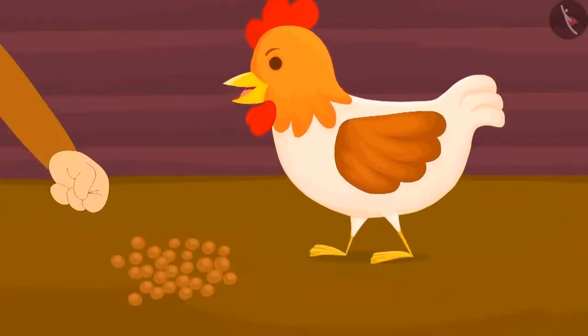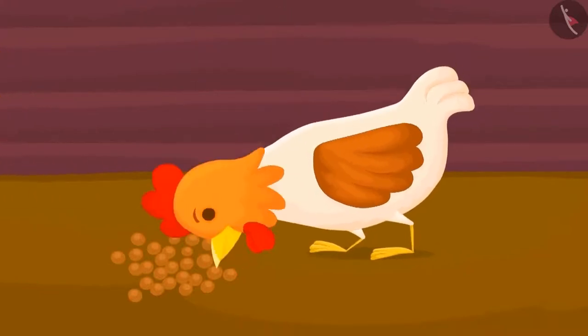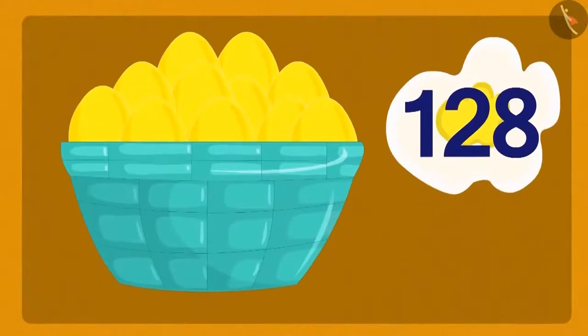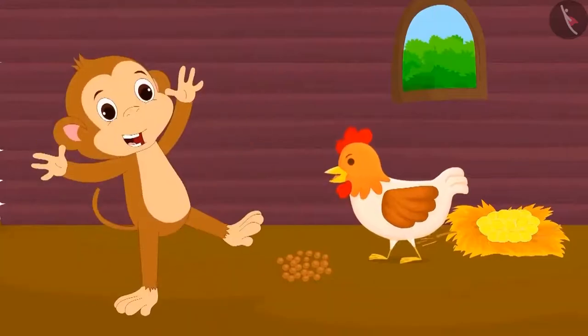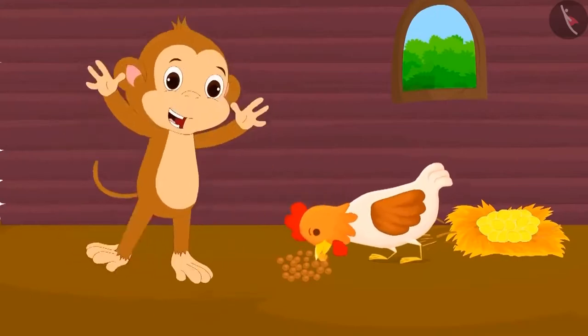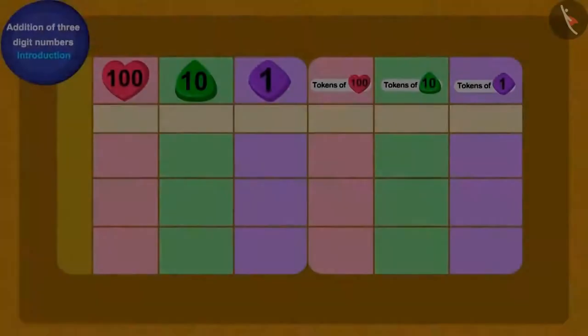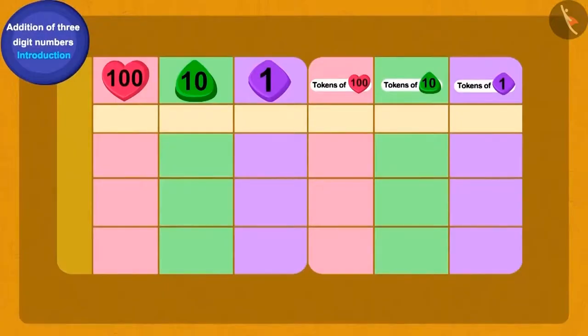Baban gave her more grain in the following week and the hen gave him one hundred twenty-eight gold eggs that week. Baban started dancing happily. He started thinking that he will now definitely become the richest man of the village. Let us see how many golden eggs in total Baban has. We will add one twenty-eight and fifty-nine.